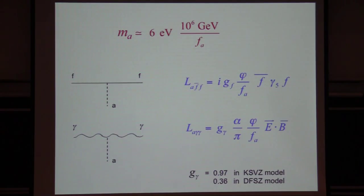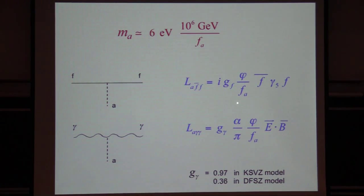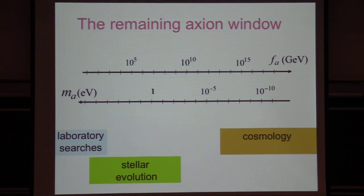The axion has a long history but we don't know if it exists. Most of its properties are determined by just one thing: the axion decay constant. The mass is known in terms of this constant, as are the couplings. When the decay constant is large the mass is very low and the particle is very weakly coupled; when it's small the mass is large and more strongly coupled. It has never been found, so most of the range is ruled out by laboratory searches such as beam dumps, rare particle decays, and the absence of effects on stellar evolution.